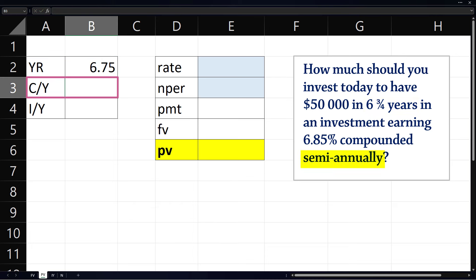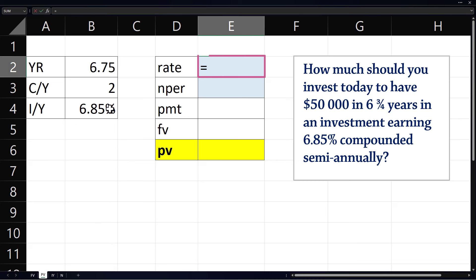Enter. Interest is compounded semiannually, so CY is 2. And the nominal interest rate is 6.85%, or 0.0685. The periodic rate will be the nominal rate divided by the compounding frequency CY. The number of periods is the number of years times CY.